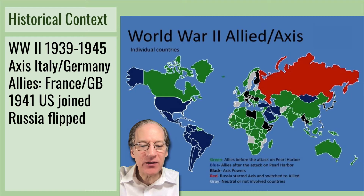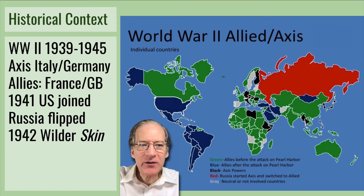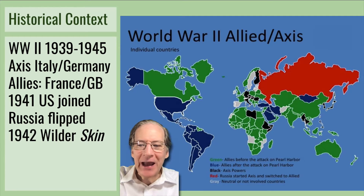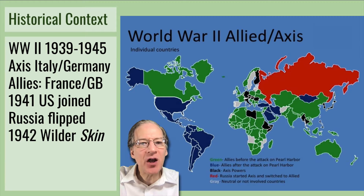In the midst of all of this, in 1942, Wilder is writing The Skin of Our Teeth — it's in the middle of the war. And Act III of this play involves how do you build a society that recovers after the war is over?